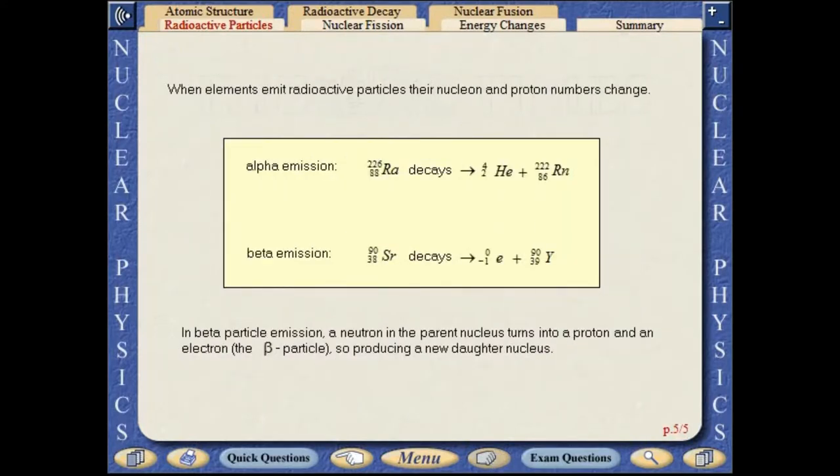When elements emit radioactive particles, their nucleon and proton numbers change. In beta particle emission, a neutron in the parent nucleus turns into a proton and an electron, the beta particle, producing a new daughter nucleus.